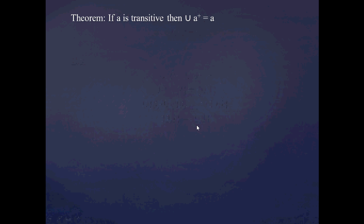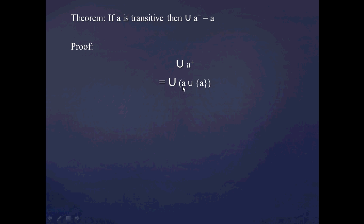But now let's prove the theorem: if A is a transitive set, then the union of A+ is equal to A. And this is a pretty simple proof — it's just a computation. We start with the union of A+ and just use the definition of A+. So this equals the union of (A union the set containing A).